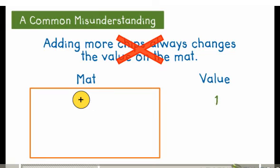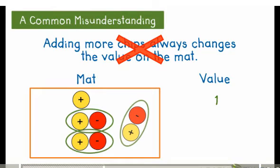However, if we start with our original chip and then add a zero pair, we have not changed the value on the mat. In fact, we can add as many zero pairs as we like, but the value on the mat will still be positive 1.